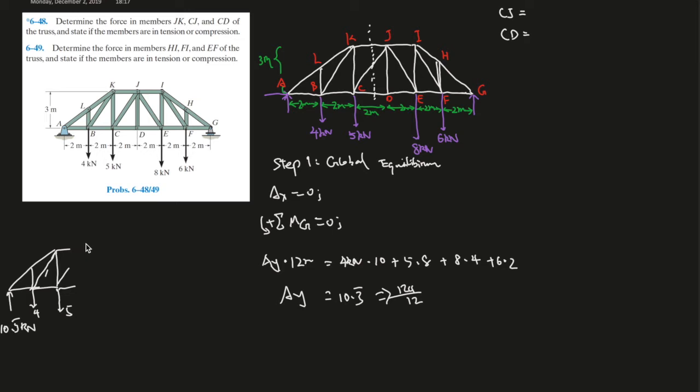And in the end, plug everything in your calculator. AY should really give you about 10.3, and the 3 goes down forever. So it's 10 and 1 over 3. Or in fractions is 124 over 12. So that's AY. And we've found all the forces we're going to need for the right side of the truss.